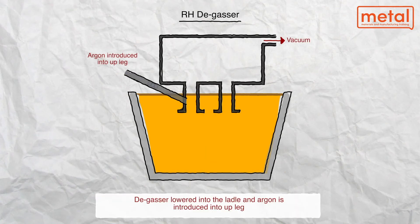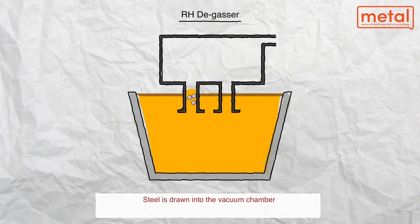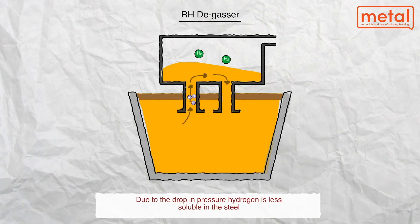An RH degasser vessel equipped with oxygen injection can further decarburize steel — that is, reduce the carbon content within the liquid steel.